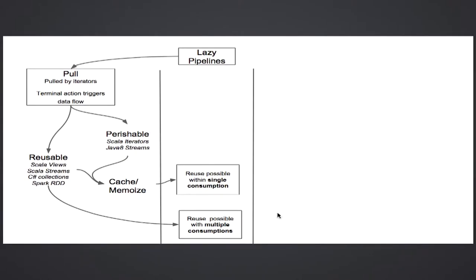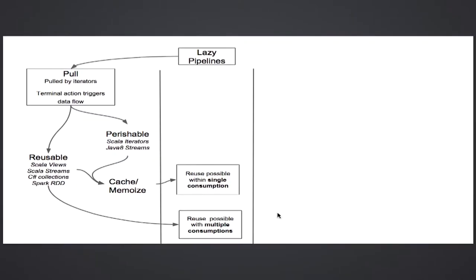Now the pull-based systems summary. Lazy pipelines are pull-based and push-based. Pull-based systems use iterators; terminal action triggers the data flow. They could be perishable or reusable — we saw both examples. Both can be memoized or cached, and then used multiple times. Reuse is possible within a single consumption. For reusable collections, if you don't memoize, you can still reuse them, but then it is multiple consumption — the pipeline starts all the way from the beginning.